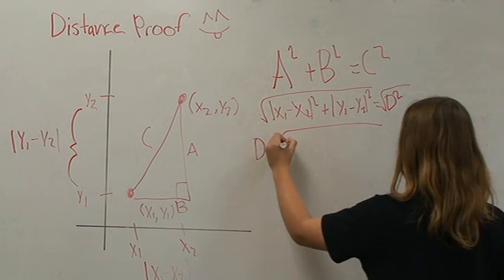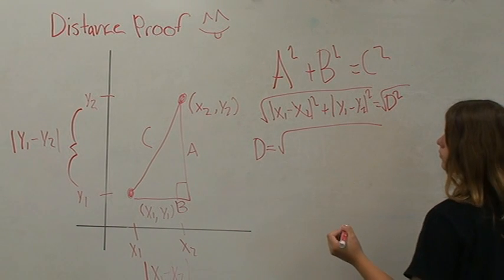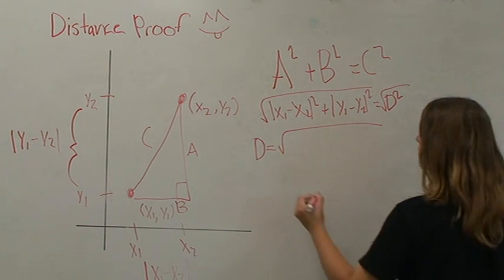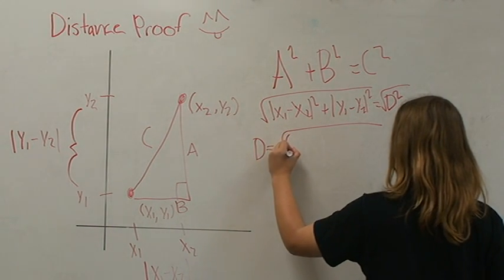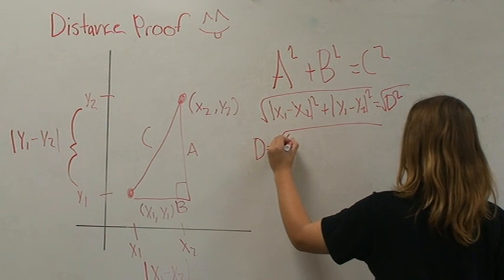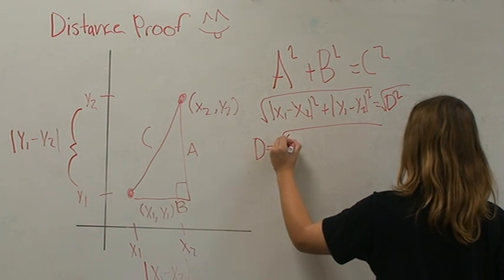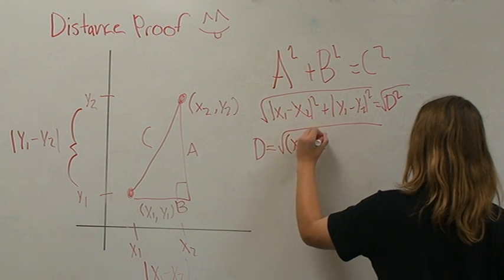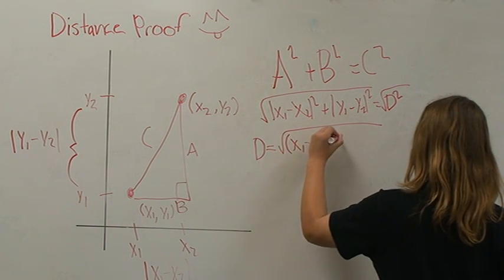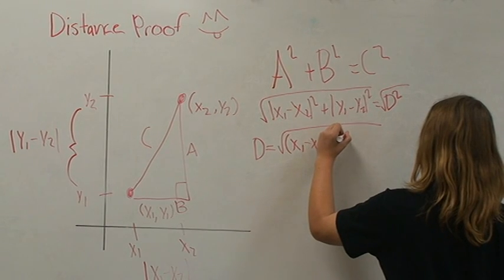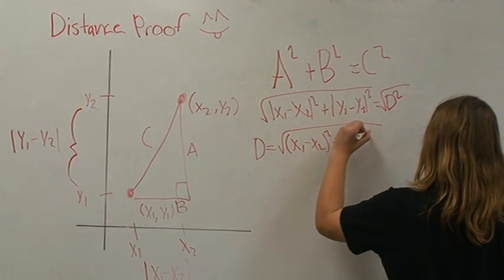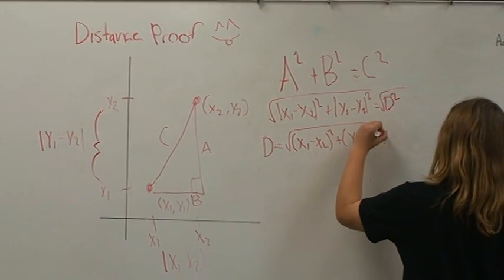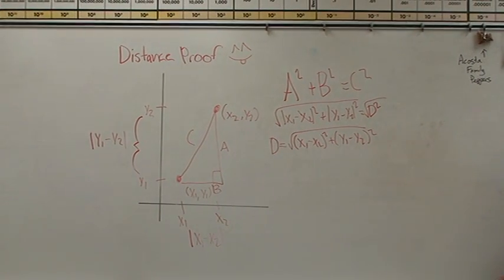Now since we have absolute values in a perfect square, we can take those absolute values out and just use parentheses, since perfect squares are always positive. So D equals the square root of x1 minus x2 quantity squared plus y1 minus y2 quantity squared. And this is our distance proof.